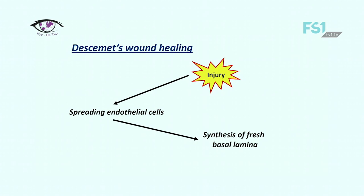Descemet's wound healing. There are only two steps in Descemet's wound healing. After traumatic interruption of Descemet's membrane, endothelium spreads its cells trying to cover the surface of the defect, and at the same time it synthesizes fresh basal lamina which is structurally almost identical to the normal Descemet's layer.